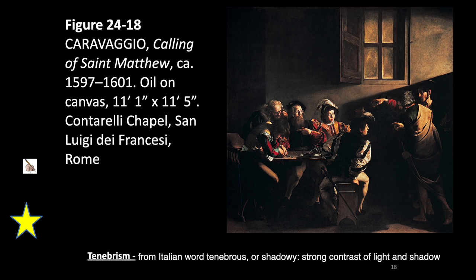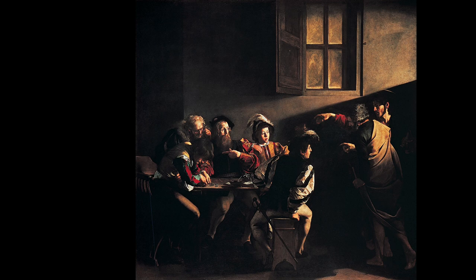Here we have Caravaggio's Calling of St. Matthew. Tenebrism, from the Italian word tenebris meaning shadowy, describes a strong contrast of light and shadow, which is a key feature of Caravaggio's style. Here, Christ, cloaked in mysterious shadow, summons Levi the tax collector, or St. Matthew, to a higher calling. Caravaggio injected naturalism into the representation of sacred subjects, reducing them to human dramas played out in harsh and dingy settings. The unidealized figures he selected from the fields and streets of Italy were effective precisely because of their familiarity.